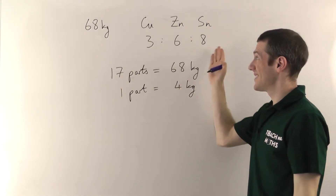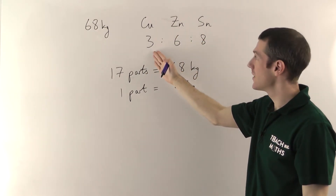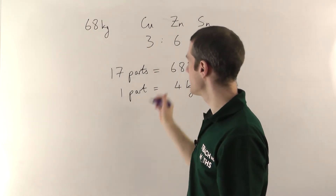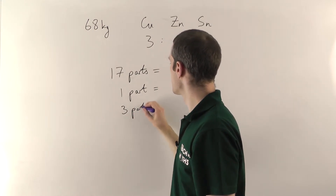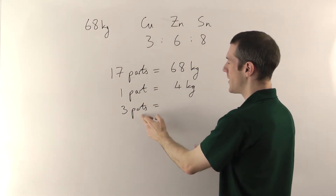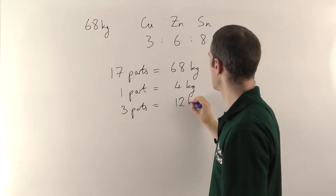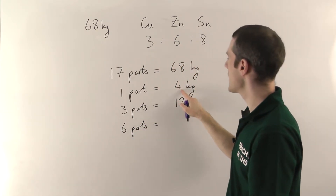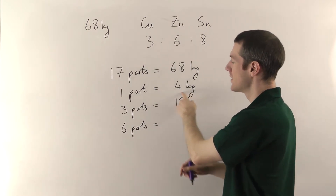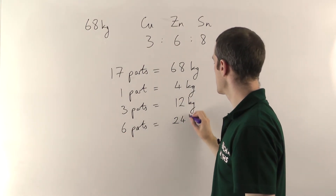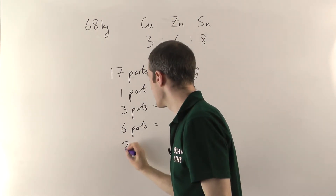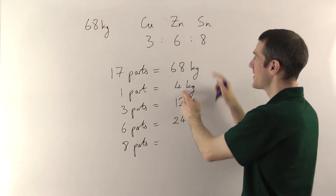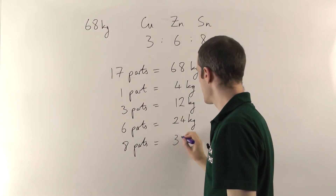Now I know one part is 4 kilograms. For copper — three parts — that's 3 times 4, which is 12 kilograms. For zinc — six parts — one part is 4 kilograms, times 6 gives 24 kilograms. For tin — eight parts — one part is 4 kilograms, times 8 gives 32 kilograms.